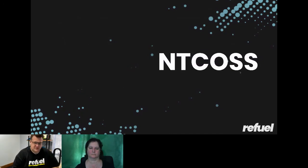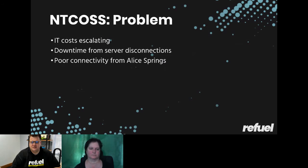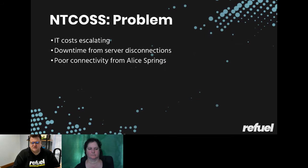Now let's talk about the Northern Territory Council of Social Service. They came to us with escalating IT costs and really didn't know why — the IT provider hadn't properly explained why costs were increasing. They had a remote server environment with their IT provider, and with offices in both Darwin and Alice Springs, the Alice Springs office had really poor connectivity to the server in Darwin, resulting in high dissatisfaction with the environment there.